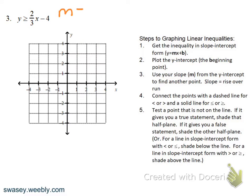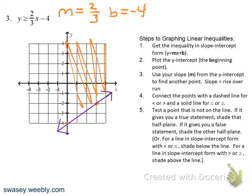On this next example, the slope is two-thirds and the y-intercept is negative four. Plot a point at negative four, then go up two to the right three. This will be a solid line because of the 'or equal to.' Since it's greater than, we shade above. You can also do a test point if you prefer.